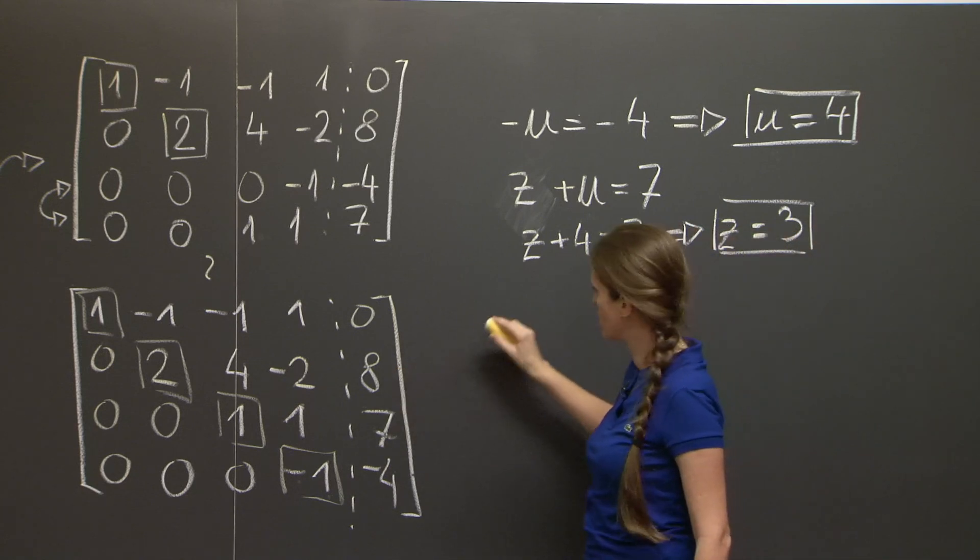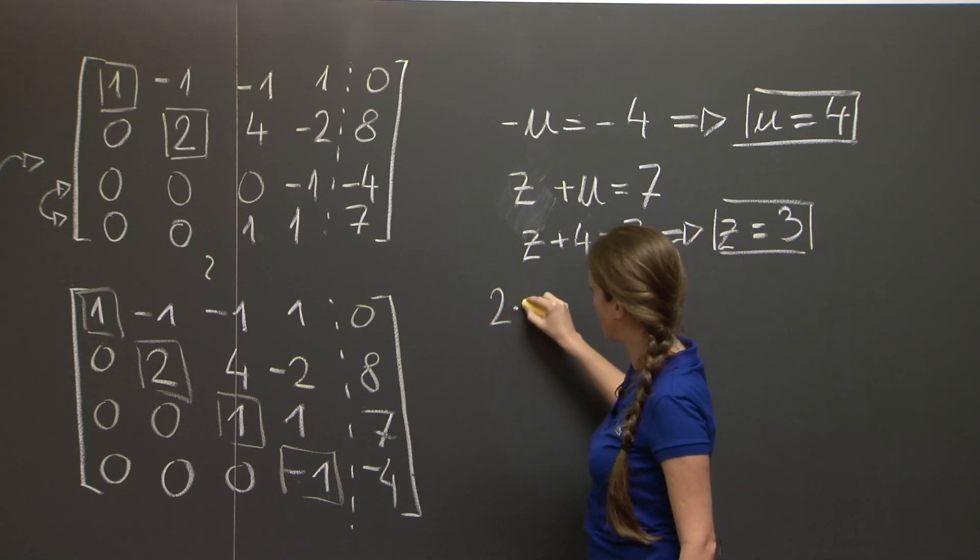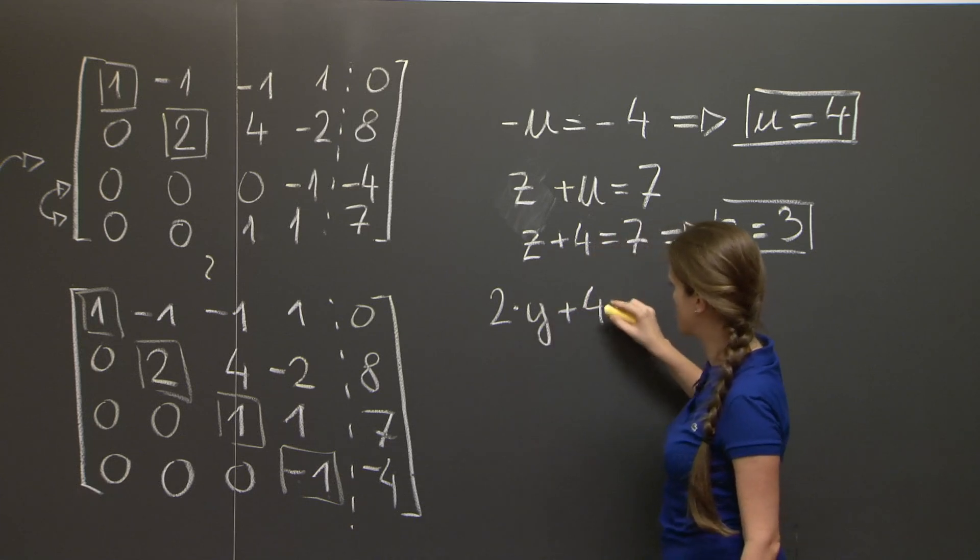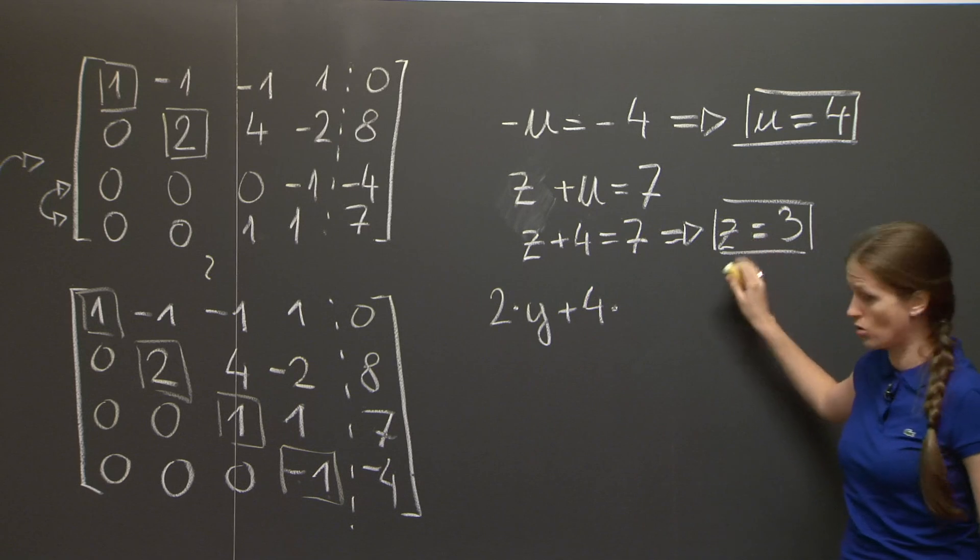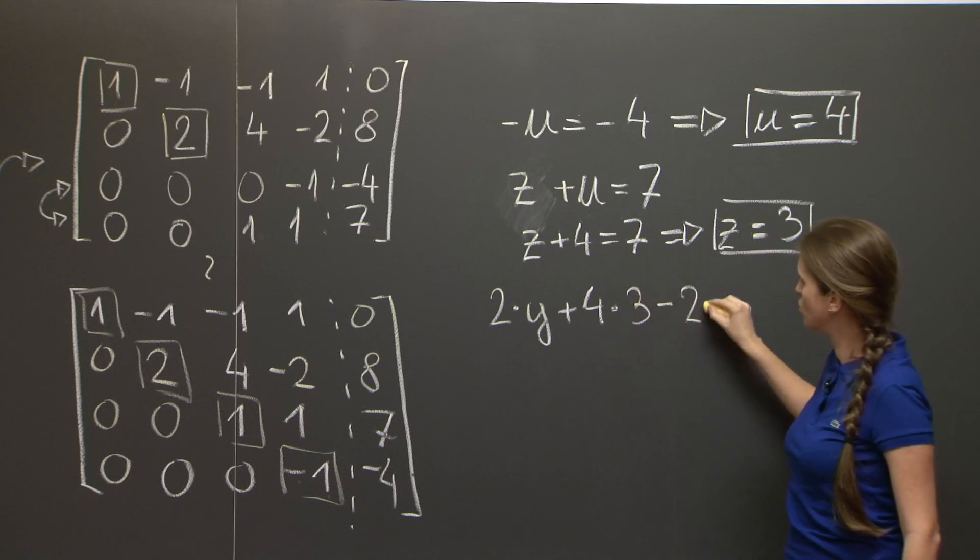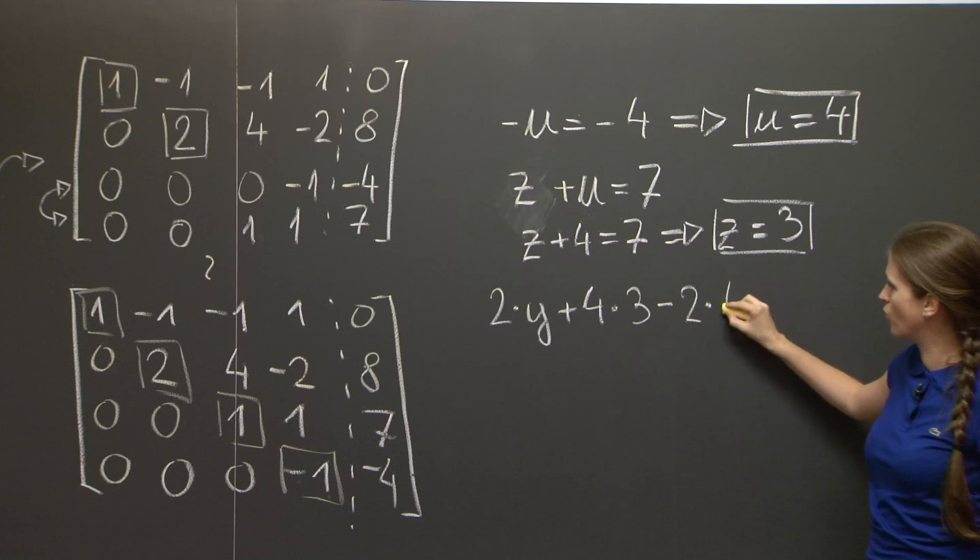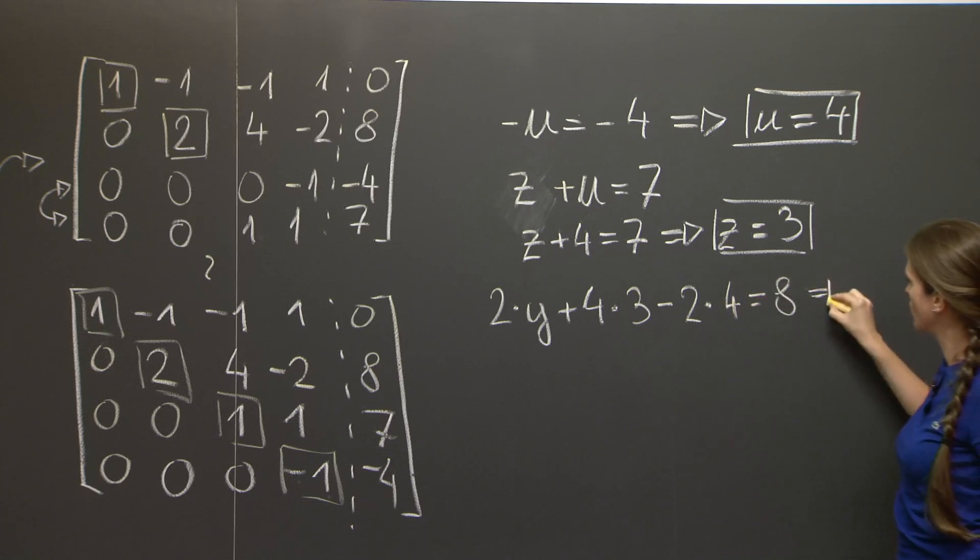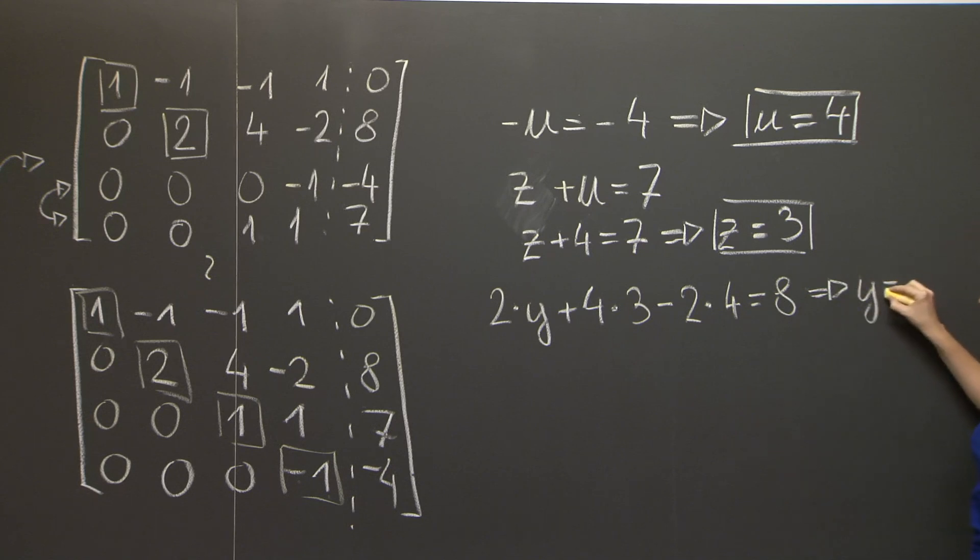The second equation is 2 times y, plus 4 times z, but z is 3, minus 2 times u, but u is 4, equals 8. And from this one can easily compute that y is equal to 2.